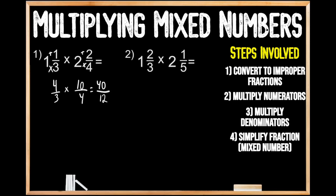Now we're going to move on to step number 4, where we're going to simplify the fraction — in brackets we see the term mixed number. The reason that's there is because currently we have an improper fraction: the value of our numerator is greater than the value of our denominator, so we can't leave this as is. We have to convert this improper fraction into a mixed number by dividing the value of our numerator by the value of our denominator. We have a numerator of 40 and a denominator of 12, so we're going to divide 40 by 12.